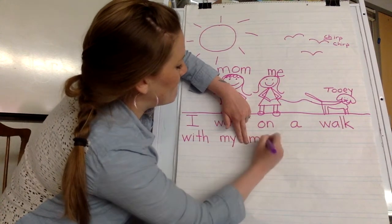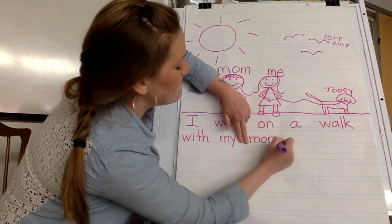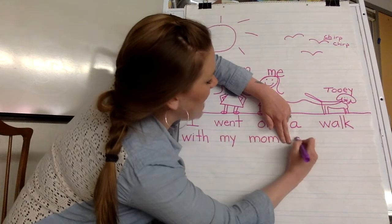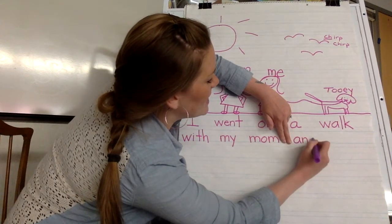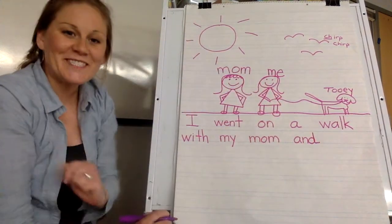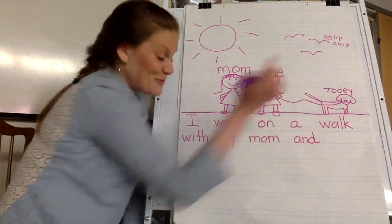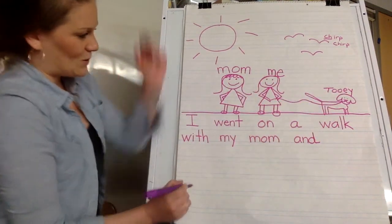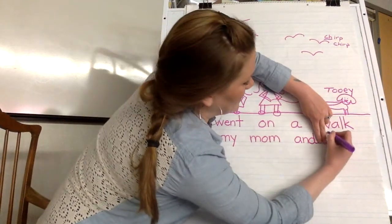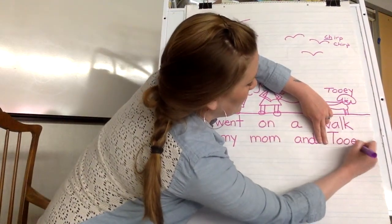Mom. Mom. And. And. Who else did they go on a walk with? With my mom and Tooey. Alright. Tooey. Right here. Make sure you have your finger spaces. Tooey.